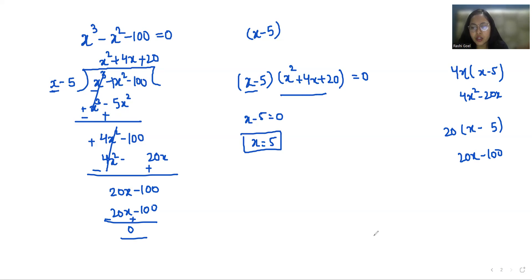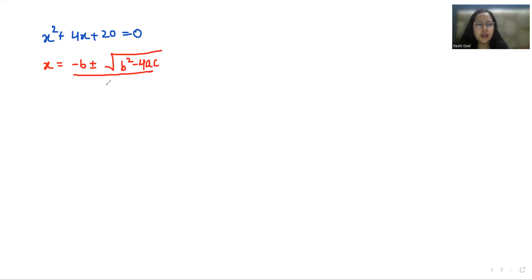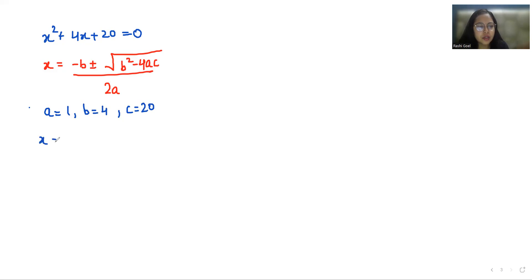Now we are going to solve the quadratic equation x² + 4x + 20 = 0 using the quadratic formula: x = (-b ± √(b² - 4ac)) / 2a, where a is the coefficient of x², b is the coefficient of x, and c is the constant. So putting in the values: x = (-4 ± √(4² - 4·1·20)) / (2·1).